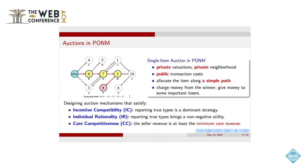So our target is to design IC/IR and core competitive auction for this scenario. So IC here means each buyer not only reports its true value, but also exposes its full neighbor information to the seller. And the core competitiveness is about the revenue organization.